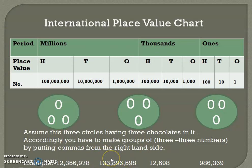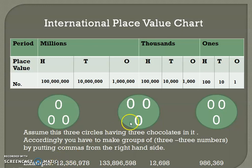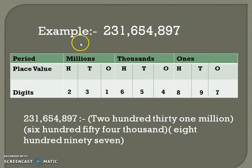Before three numbers there is a comma, and three numbers are in the millions period. Here we are having eight digits — before three numbers there is a comma, again before three numbers there is a comma, and two numbers are left on the left-hand side. You have to start putting commas from the right-hand side, before every three numbers.